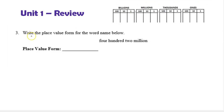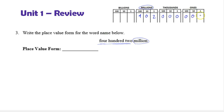Problem 3: write the place value form for the word name below. We're given 'four hundred two million.' This represents our three digits and our grouping value of millions. We want four hundred two in the millions: four hundred millions, zero ten millions, and two one millions. The remaining digits are placeholders — without them we'd just have four hundred two. So in place value form, it's 402,000,000.